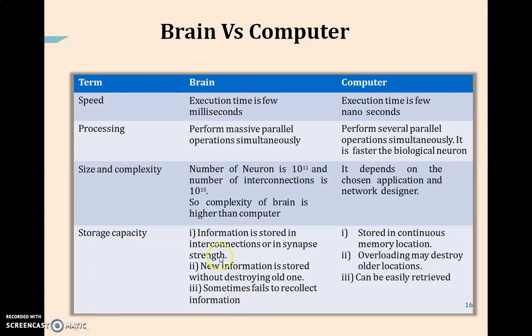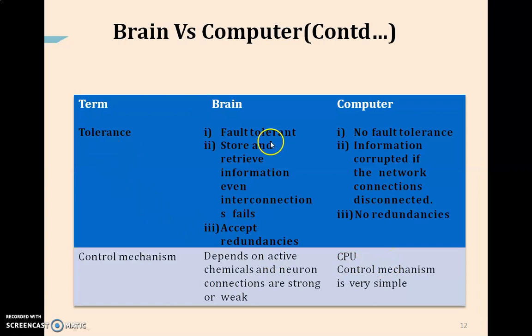Storage capacity of the brain: information is stored in interconnections or synapses. New information can be stored without destroying the old one. Sometimes it fails to recollect information when we get older. But for computers, information is stored in continuous memory locations. Overloading may destroy older locations, but data can easily be retrieved. Fault tolerance in the brain: it can store and retrieve information even if internet connection fails and accepts redundancy. But accepting redundancy is not possible with computer systems. If fault tolerance is supported, it will work; otherwise, there's no fault tolerance and information is corrupted if network connections are disconnected.